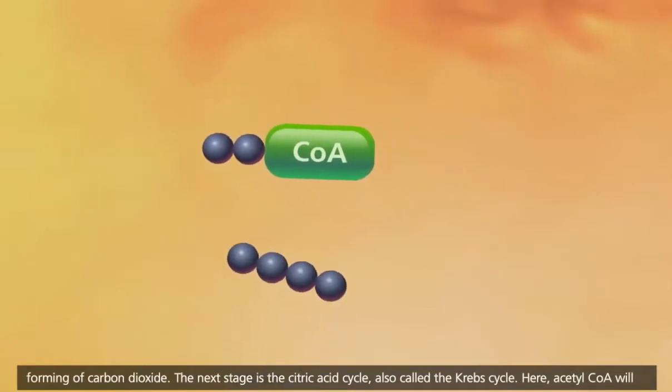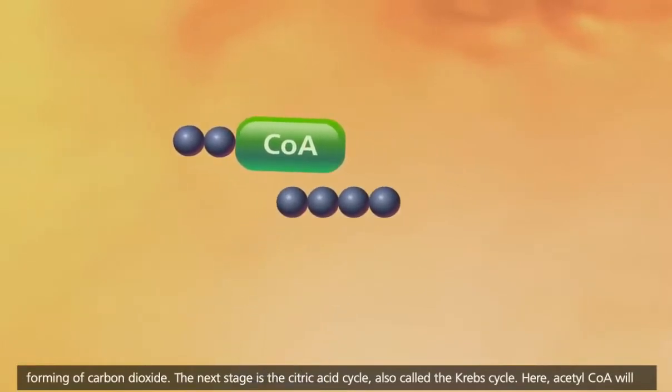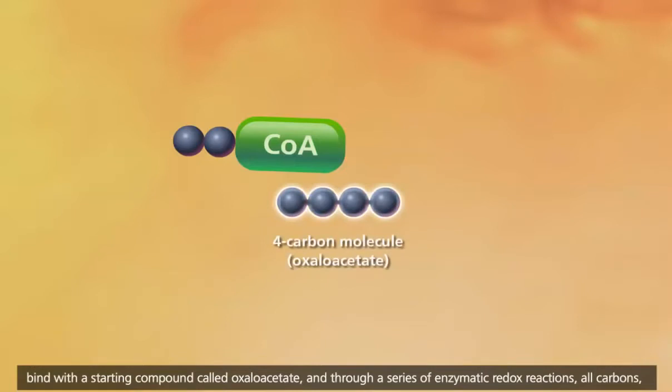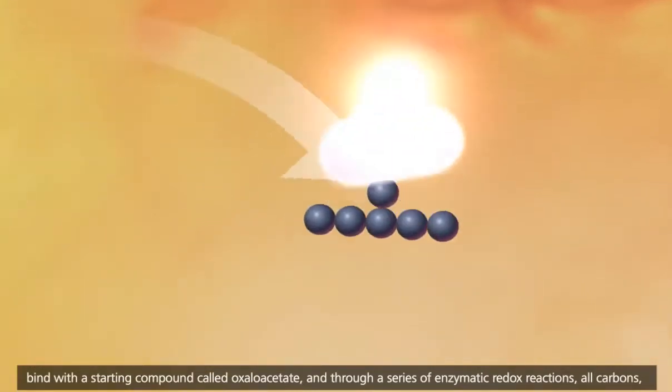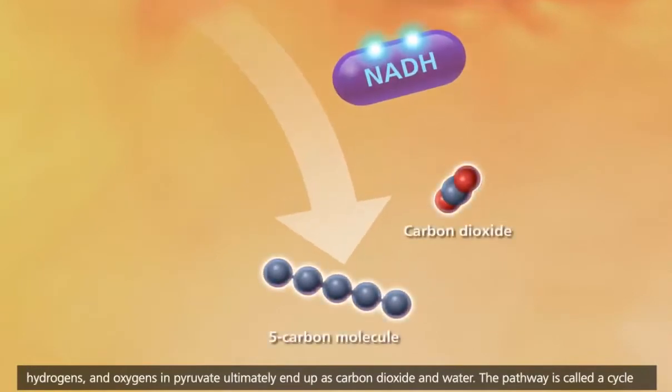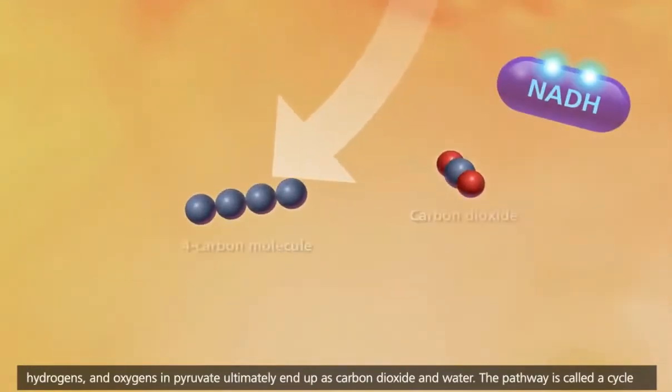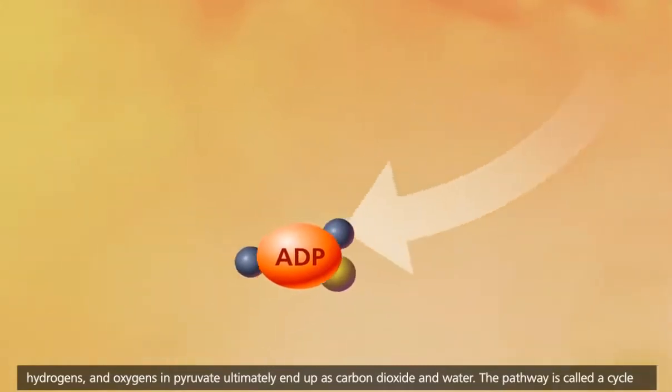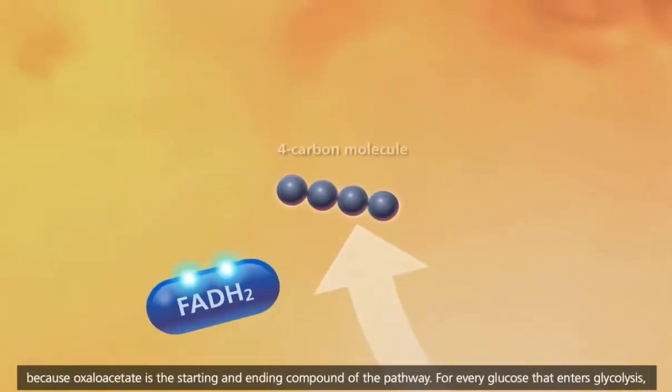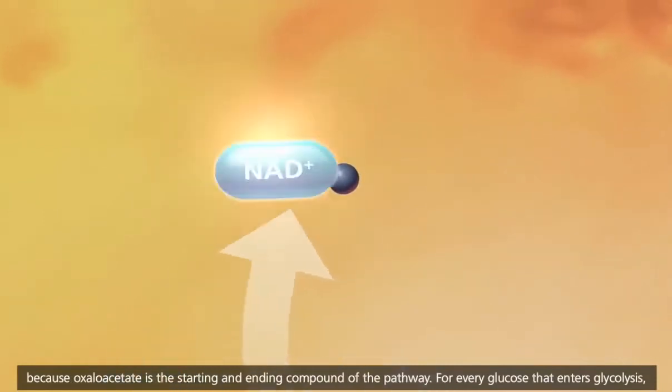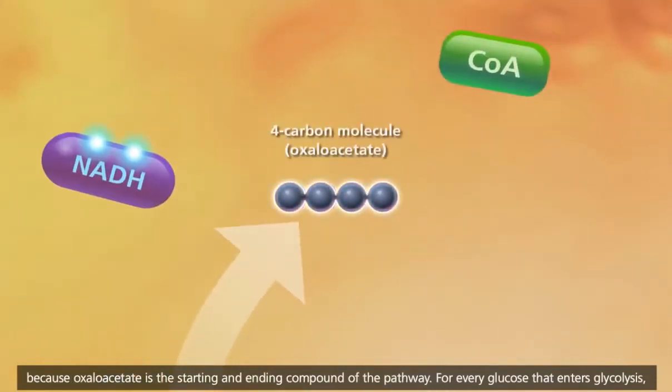The next stage is the citric acid cycle, also called the Krebs cycle. Here, acetyl-CoA will bind with a starting compound called oxaloacetate. And through a series of enzymatic redox reactions, all carbons, hydrogens, and oxygens in pyruvate ultimately end up as carbon dioxide and water. The pathway is called a cycle because oxaloacetate is the starting and ending compound of the pathway.